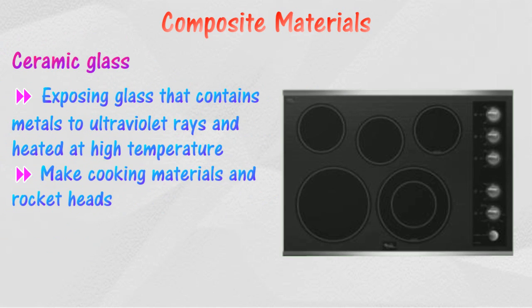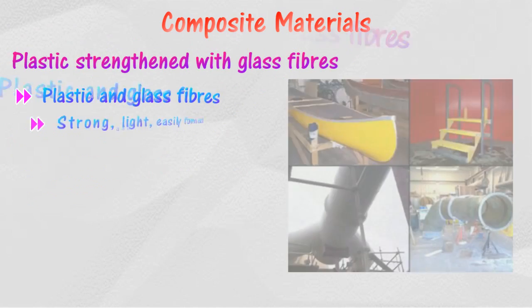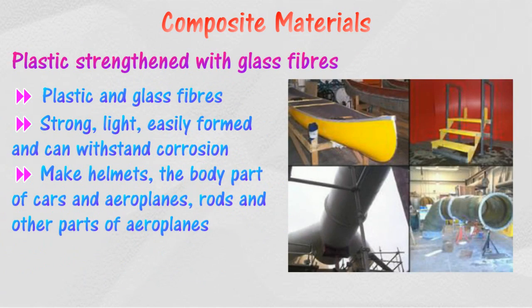Ceramic glass is produced by exposing glass that contains a certain amount of metals to ultraviolet rays and heating it at high temperature. It is used to make cooking materials and rocket heads.